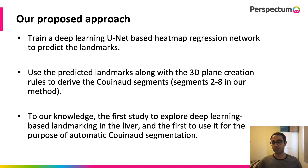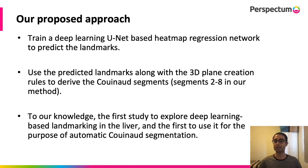The approach we propose here is to train a deep learning model based on heatmap regression to predict certain landmarks, and then use these predictions along with a set of 3D plane creation rules to derive the Couinaud segments. An advantage of this approach, as opposed to directly segmenting using masks as targets, is that if incorrect predictions need to be edited manually, it's easier to relocate a misplaced landmark than to edit masks for multiple regions. Generating labels for training and retraining is also easier. To our knowledge, this is the first study to have explored using deep learning landmarking models in the liver, and the first to use it for automatic Couinaud segmentation.